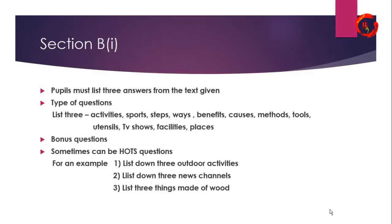Causes are the reasons why something happens — in Malay we say 'punca.' For example, causes of pollution: smoke from cars, smoke from factories, and open burning. Methods are the things you do to achieve something — for example, methods to get high marks in exams: revise your lessons every day and do a study group. Tools are objects you use — for example, pencils, scissors, glue, or a hammer. Utensils are something like cooking things.